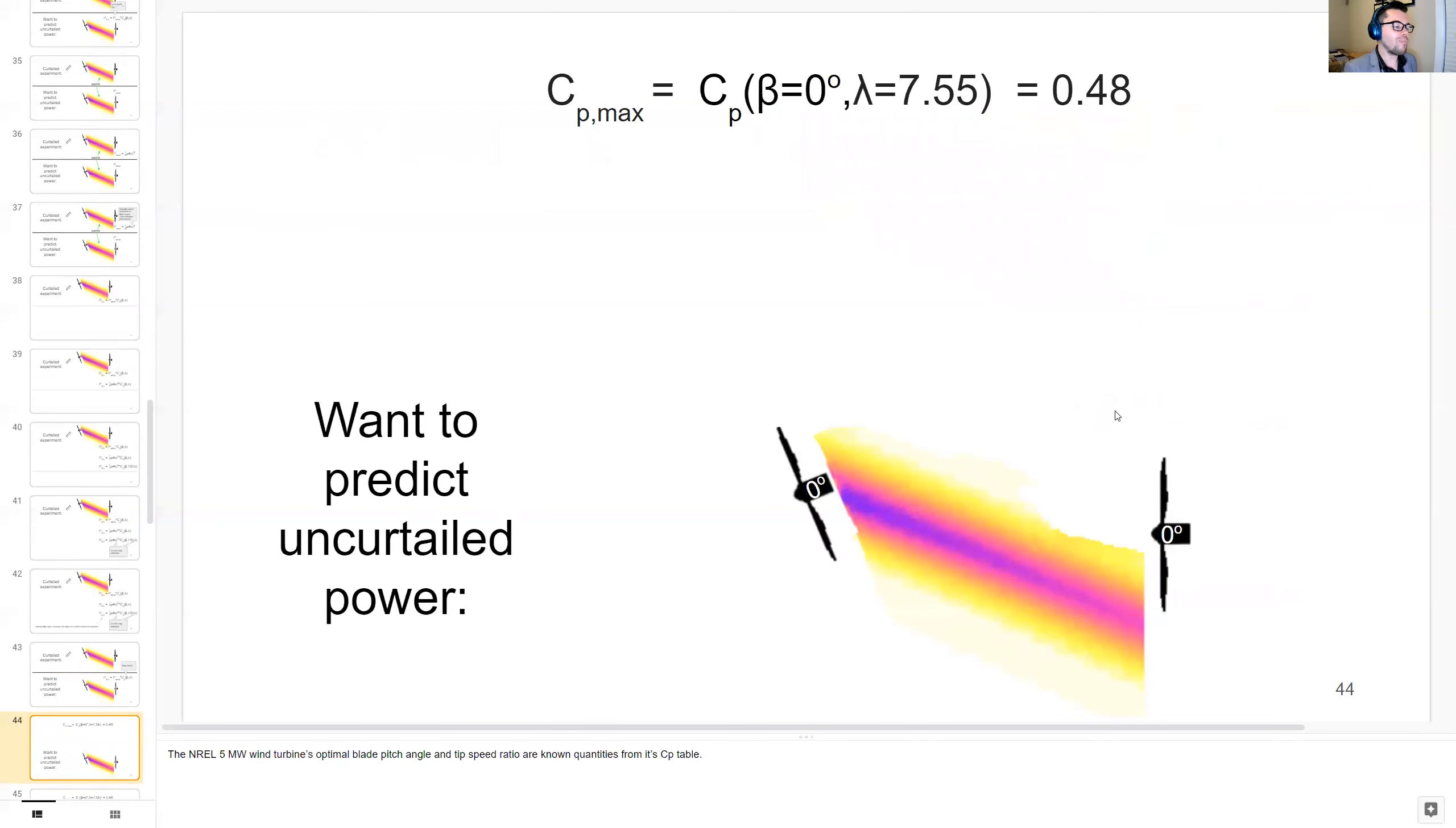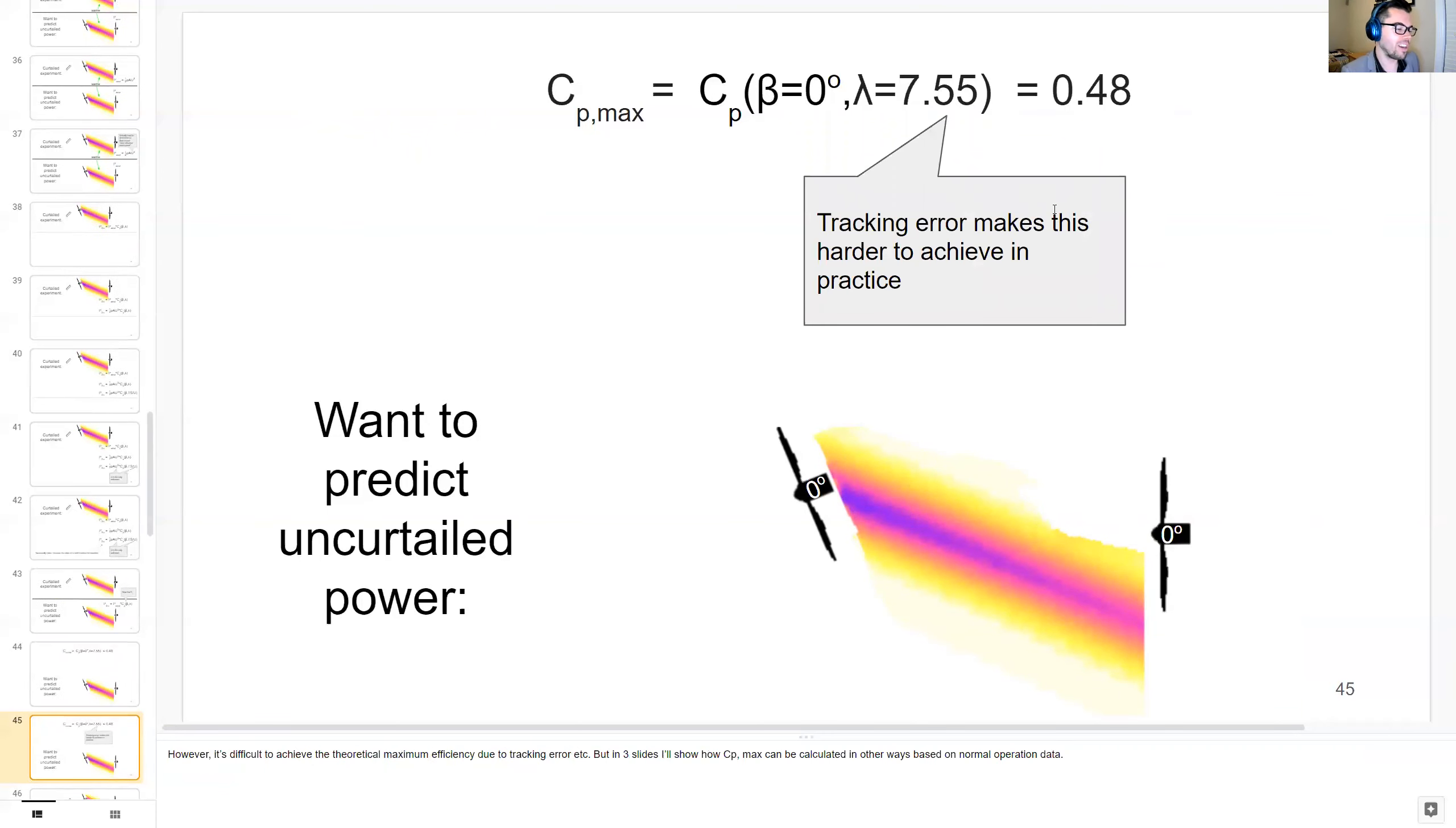The NREL 5 megawatt wind turbine's optimal blade pitch angle zero degrees and tip speed ratio are known quantities from its CP table. This gives an efficiency of about 48%. However, it's difficult to theoretically achieve this maximum efficiency due to tracking errors preventing you from getting this optimal lambda. But in three slides from now, I'll show you how CP max can be calculated in other ways based on normal operation data.